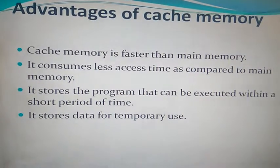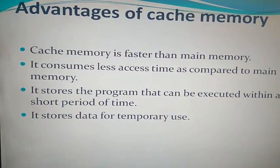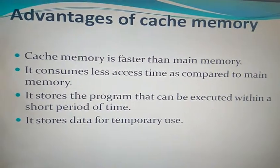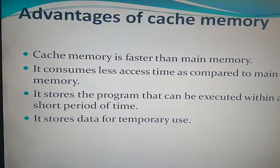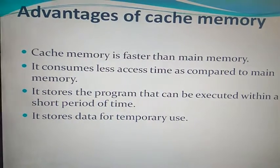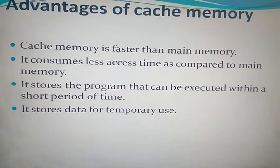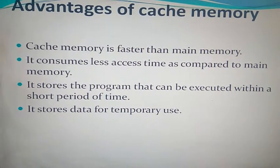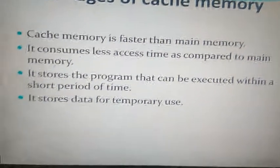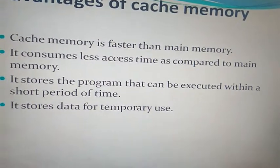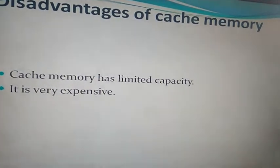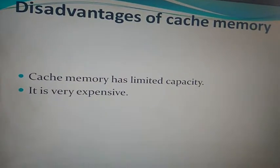The advantages of cache memory: number one, cache memory is faster than main memory — it is used to give fast output to the user. It consumes less access time compared to main memory. It stores programs that can be executed within a short period of time, and it stores data for temporary use. The data stored in cache is always on a temporary basis.